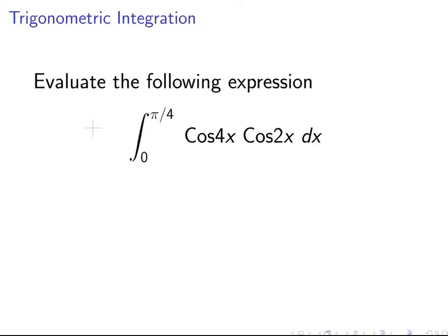So here is the problem we have. We have the product of two trigonometric terms, cos4x and cos2x, and we have to integrate the product of those two terms. So the approach we are going to take here is to use a trigonometric identity from trigonometry.